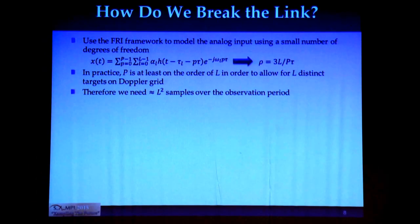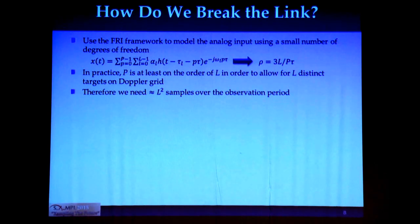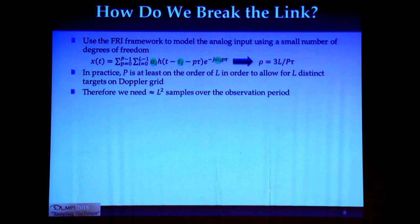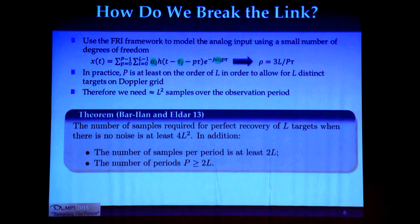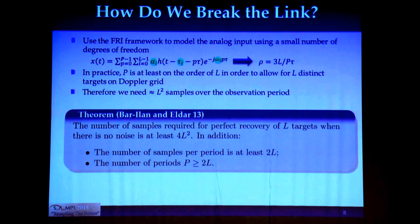How do we do this? FRI is a method to quantify signals according to the number of degrees of freedom per unit time needed to describe them. Our signal is completely defined by these 3L degrees of freedom, so its rate of innovation is 3L over the signal's duration — phi pulses of length tau. There's no general reconstruction theorem for FRI signals, but for this model we can show that 4L squared samples are enough to completely recover it when there's no noise, and samples need to be uniformly distributed across pulses.